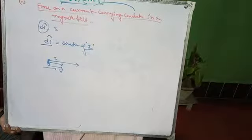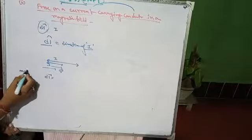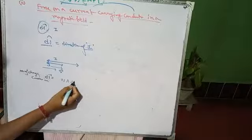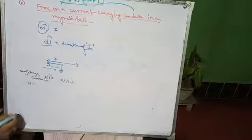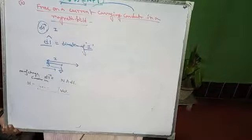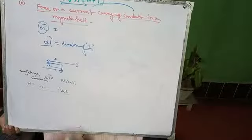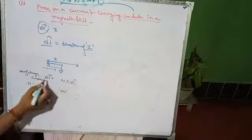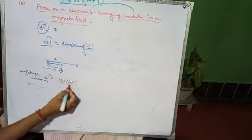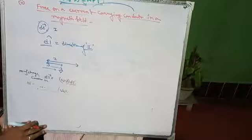Therefore, the number of charge carriers in the element dl equals n times A times dl, where n is the number of charge carriers per unit volume, and A is the cross-sectional area of the conductor. Multiplying n by A and dl gives the number of charge carriers in the small element dl.